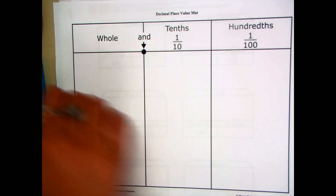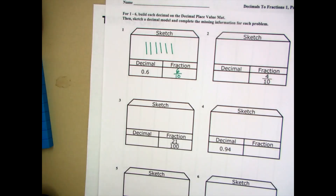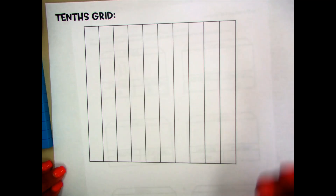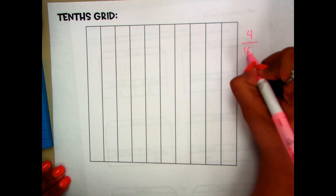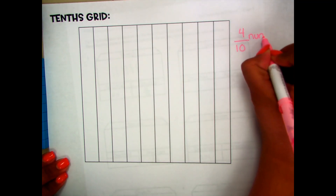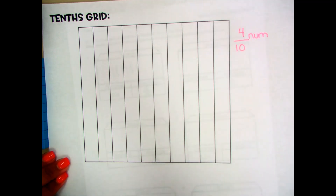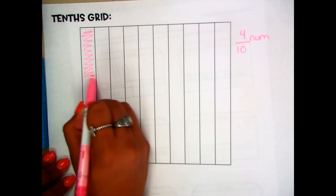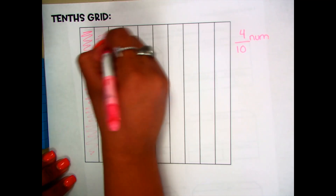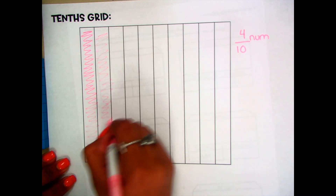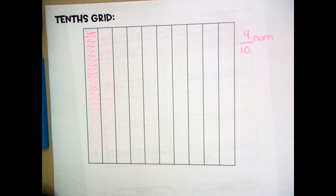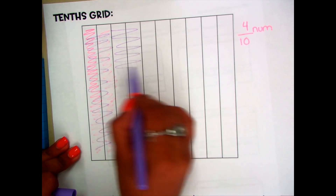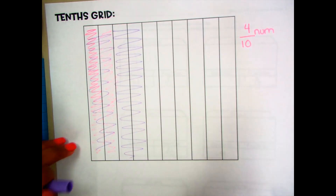Now I know how it looks. I'm going to use this as my guide. I have four-tenths, so I know that this is my fraction. My numerator is the number of rods selected or colored. So how many should I color in? Four. I'm going to go ahead and color in four: one, two, three, four. I have four colored.